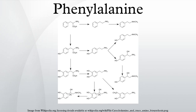Phenylalanine is found naturally in the breast milk of mammals. It is used in the manufacture of food and drink products and sold as a nutritional supplement for its reputed analgesic and antidepressant effects. It is a direct precursor to the neuromodulator phenylethylamine, a commonly used dietary supplement.